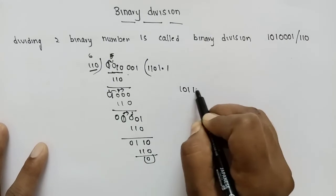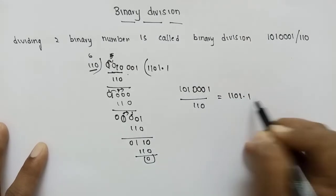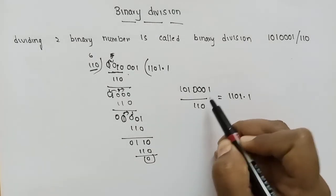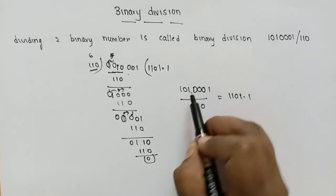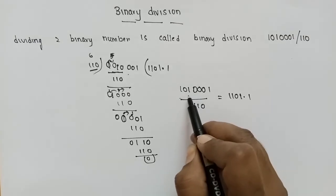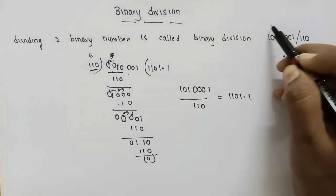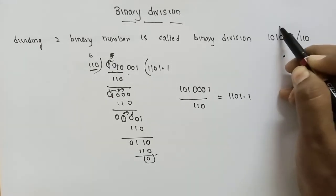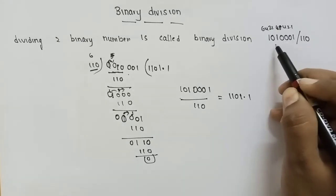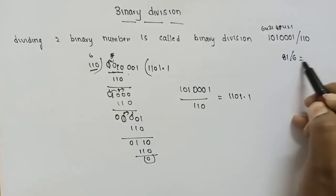1 1 1 1 0 0 1 divided by 1 1 0 equals 1 1 0 1 point 1. Now using the flexible number system: 8, 4, 2, 1 — 64 plus 16 plus 1. 64 plus 16 is 80, plus 1 is 81. So we have 81 divided by 6.